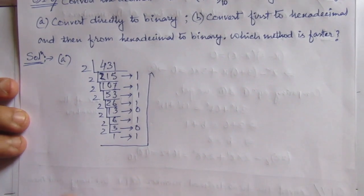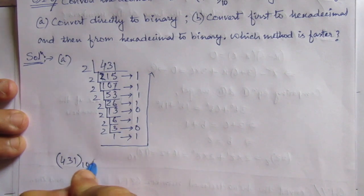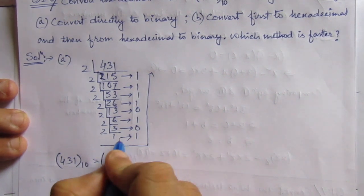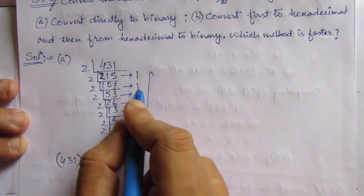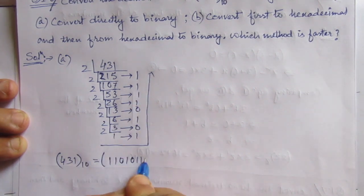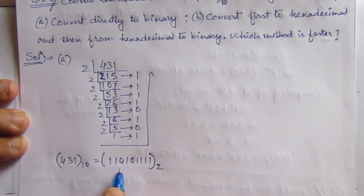So we have got 431 in decimal equal to 110101111 in base 2. So this is the binary equivalent of this decimal number.